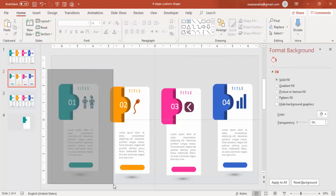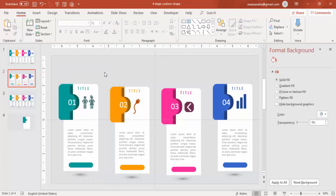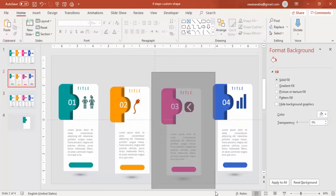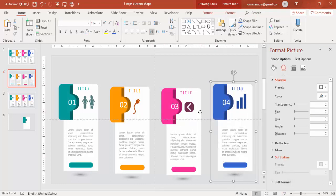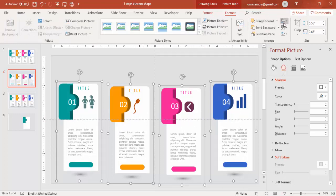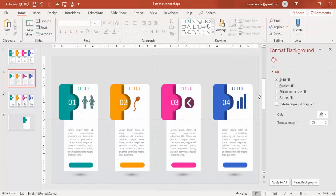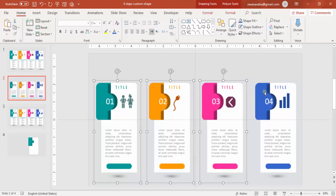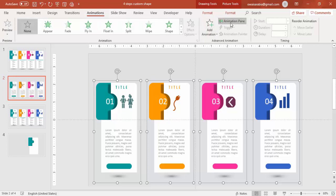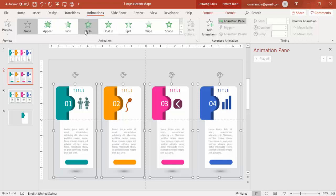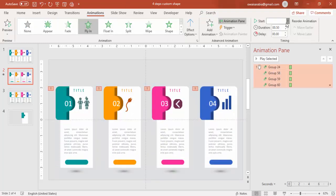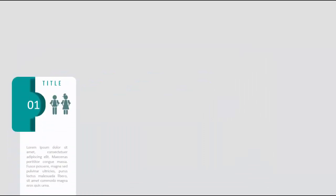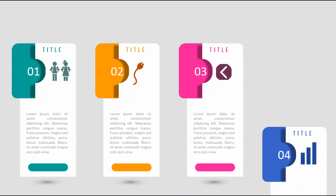You can see the design is almost completed. If you want, you can group each option one by one. Select all these objects, go to Animation Pane and enable it, then apply Fly In animation. You can set all of them to On Click or After Previous. In the slideshow, when you click it shows the first option, then the second, the third, and the fourth.